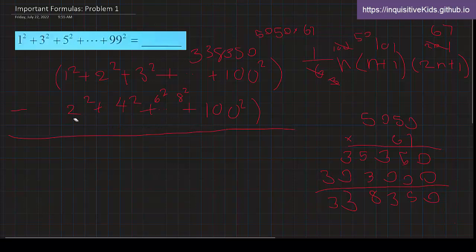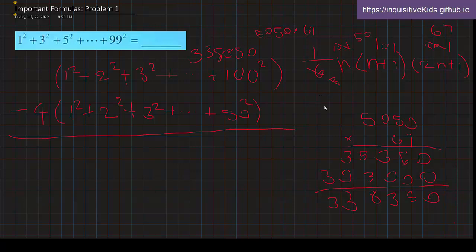And we get, sorry, let me erase this. We can factor out a 4. And then we get 1 squared plus 2 squared plus 3 squared. And remember, the last base number was 100. So divide that by 2. It's 50. So all the way up to 50 squared. Now everything is much easier. We can apply this again. But this time we're replacing everything with 50. So pause the video again and see if you can do that.